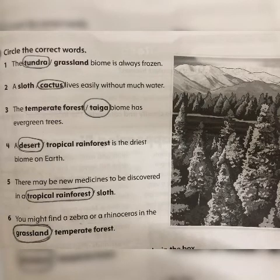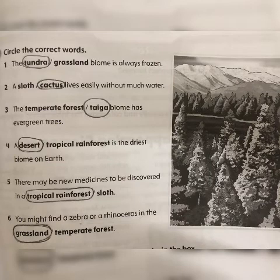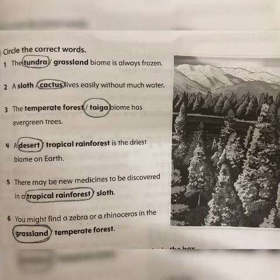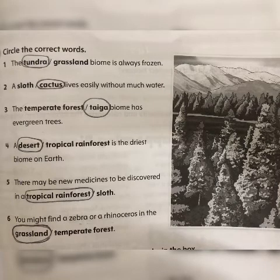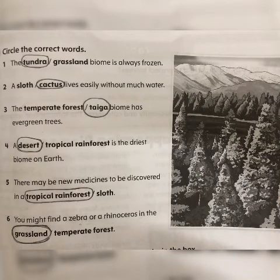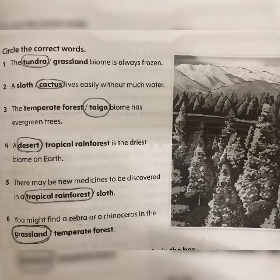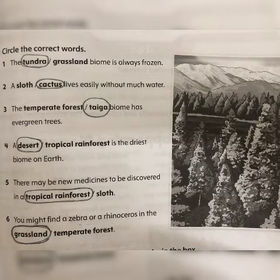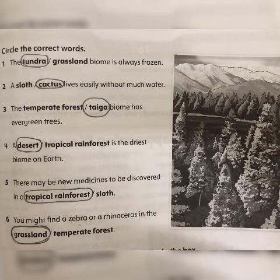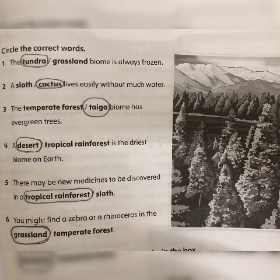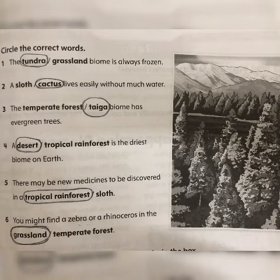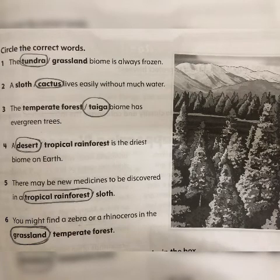Sentence five: there may be new medicines to be discovered in a tropical rainforest slash sloth. When we say 'in a,' we are talking about a place, and sloth is an animal, so the place is tropical rainforest. Circle tropical rainforest in sentence five. The last sentence: you might find a zebra or a rhinoceros in the blank — option one is grassland, option two is temperate forest. Zebra and rhinoceros both live in the grassland biome, so circle grassland in sentence six.